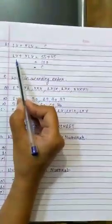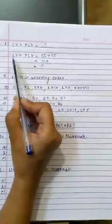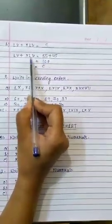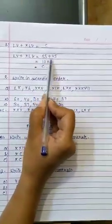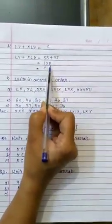B part: LV plus XLV. Convert it into Hindu Arabic numeral. Solve it into Hindu Arabic numeral. LV is 55. XLV is 45. 55 plus 45 is 100. And 100 is C.